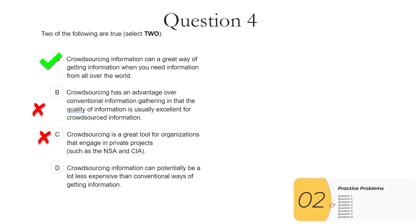D, crowdsourcing information could be potentially a lot less expensive than conventional ways of getting information. So this is a little bit related to B in that you're not hiring survey people or scientists to give you your information. You're getting information from regular plebs and that's going to be a lot cheaper. So usually crowdsource information is cheaper. So the answers we're looking for are A and D.